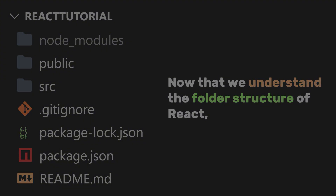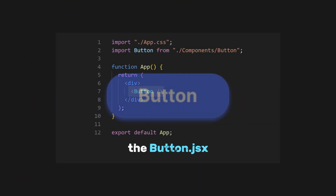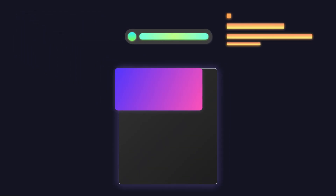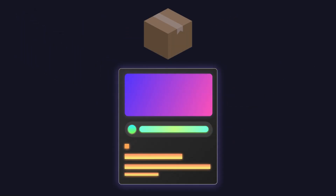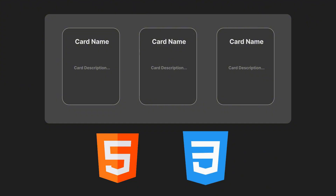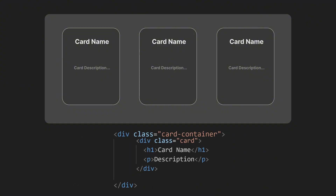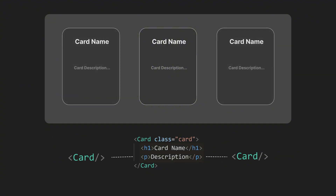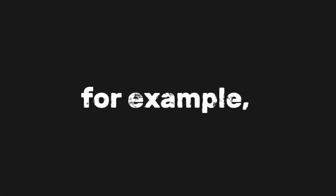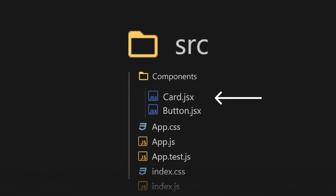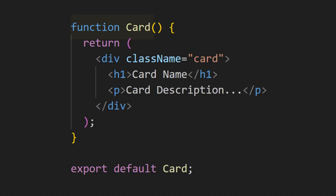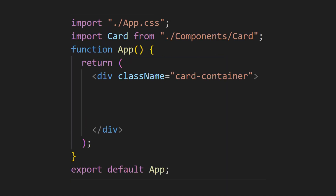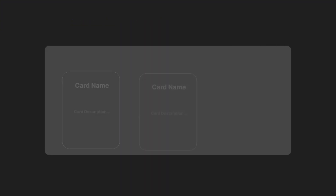Now that we understand the folder structure of React, let's move on to components. Components in React are reusable building blocks that encapsulate HTML and JavaScript logic into self-contained units. For example, instead of hard-coding the same card with different names and descriptions in vanilla HTML, we can just create a single card component and use it everywhere without writing the same code. We create a new JSX file called card inside the components folder, write a function component called card with all the HTML for your card, and export it. Then in app.js, create a div with the class card-container and place three card components inside — now you have three cards without repeating the same code.